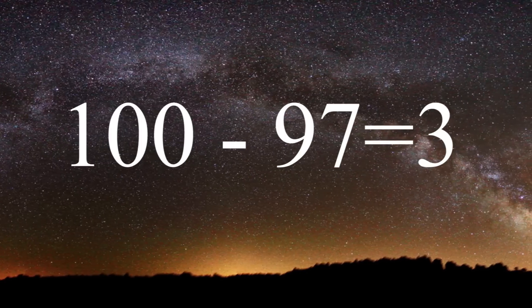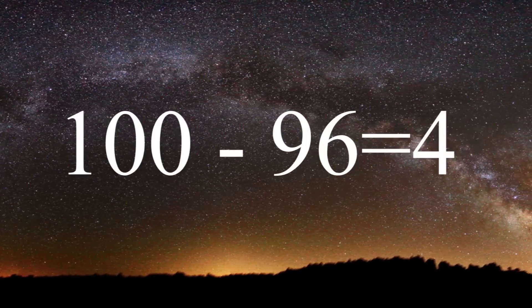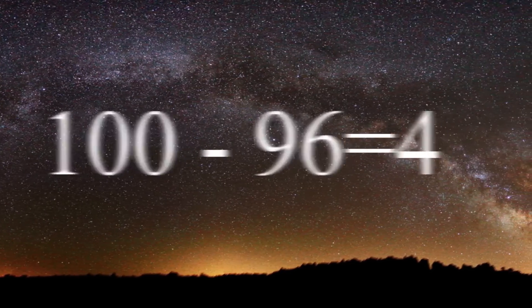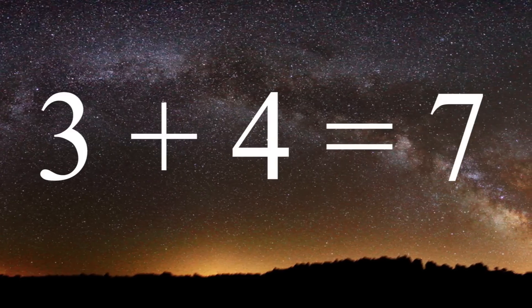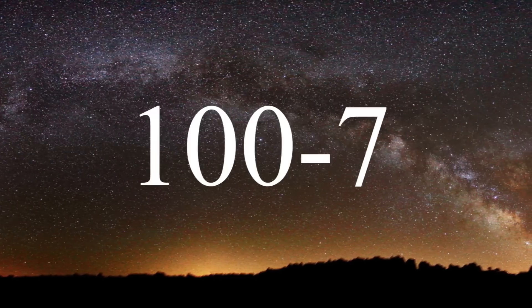So 100 minus 97 would be 3. 100 minus 96 would be 4. When you add those two numbers together, you get 7. When you take the 7 and subtract that by 100 like you did the other two numbers, the answer is 93, which is the first half of your answer.